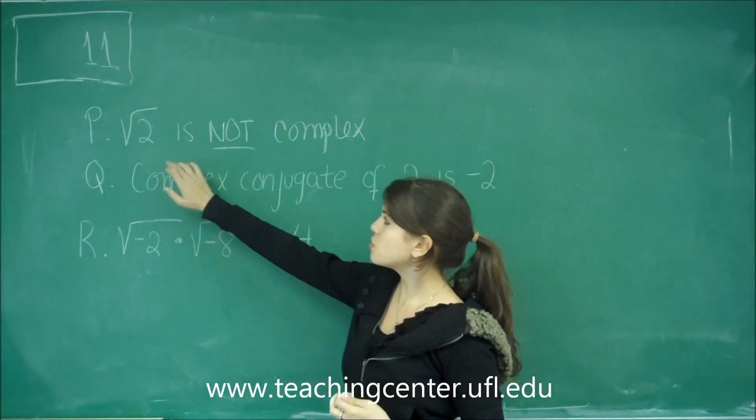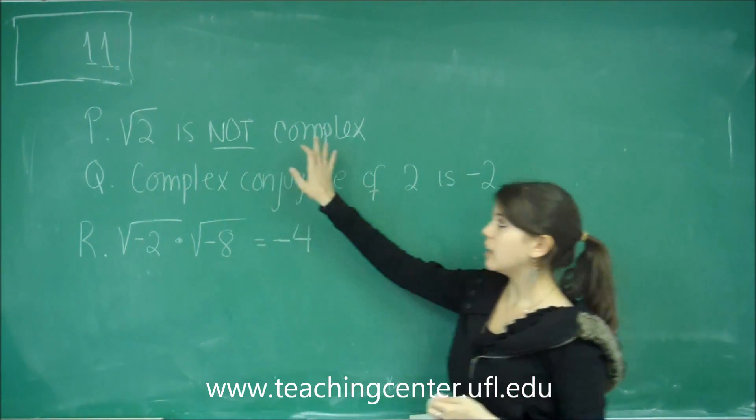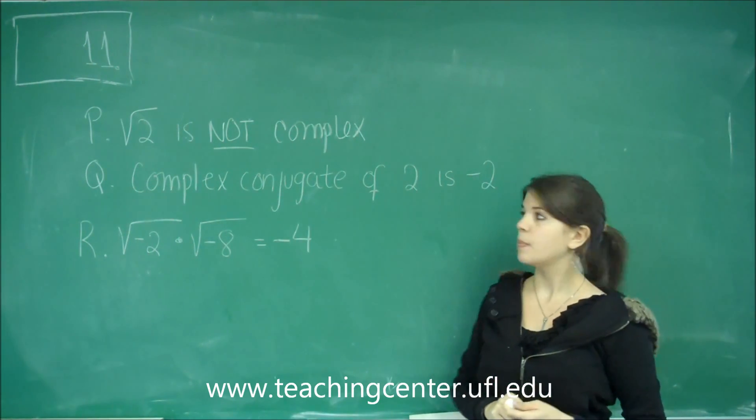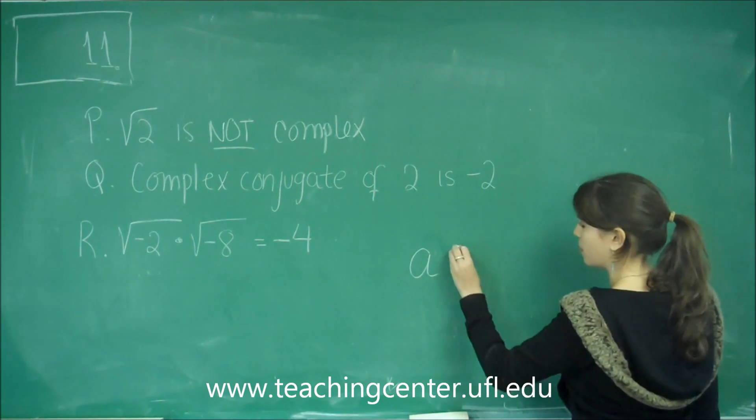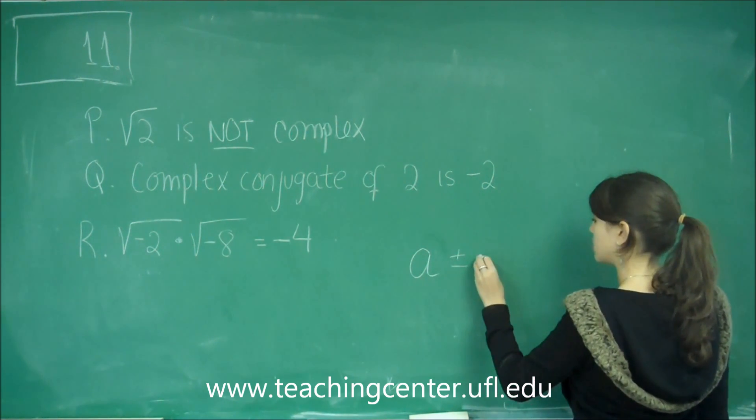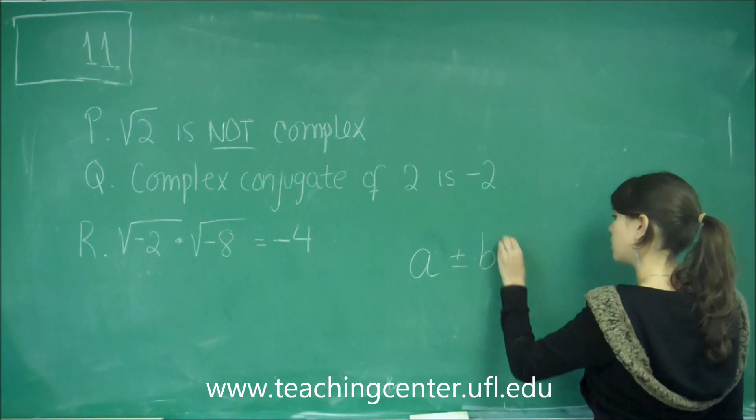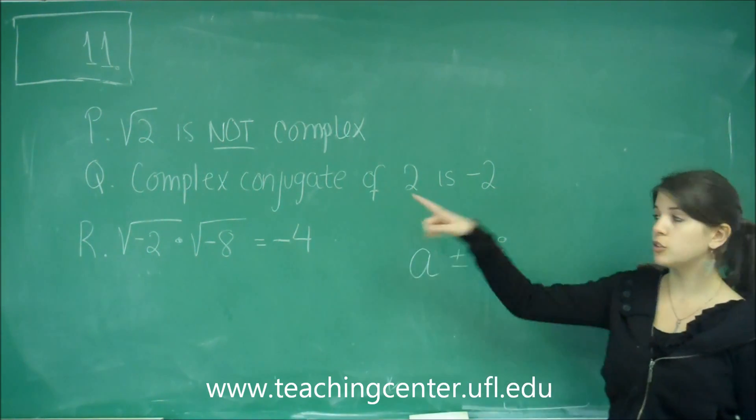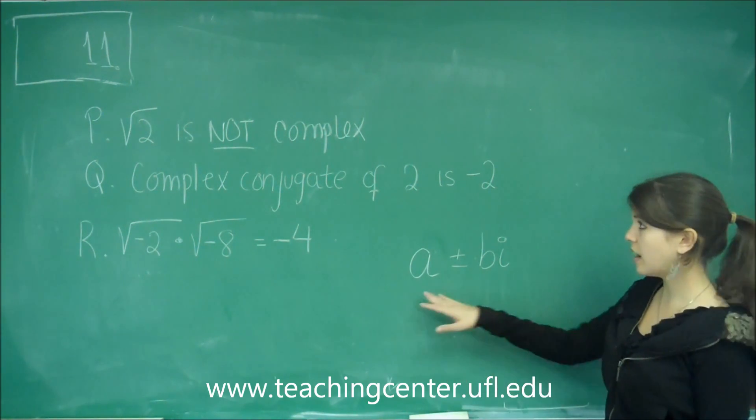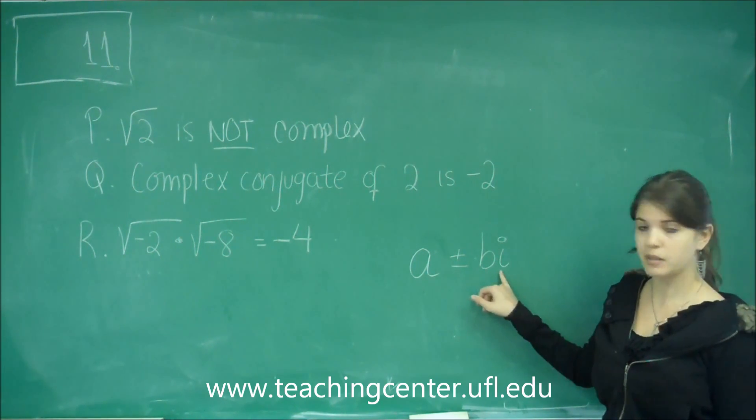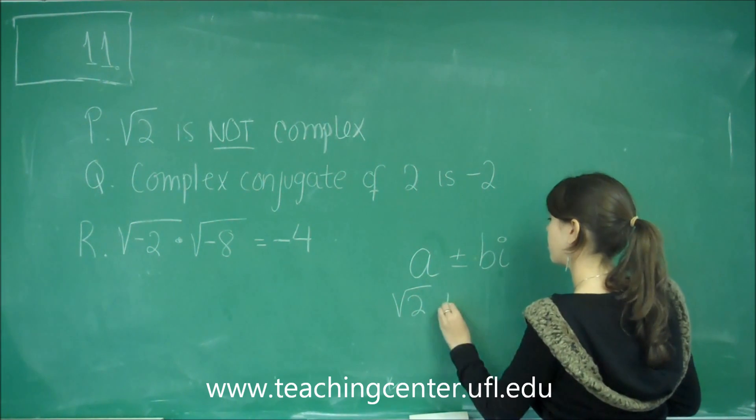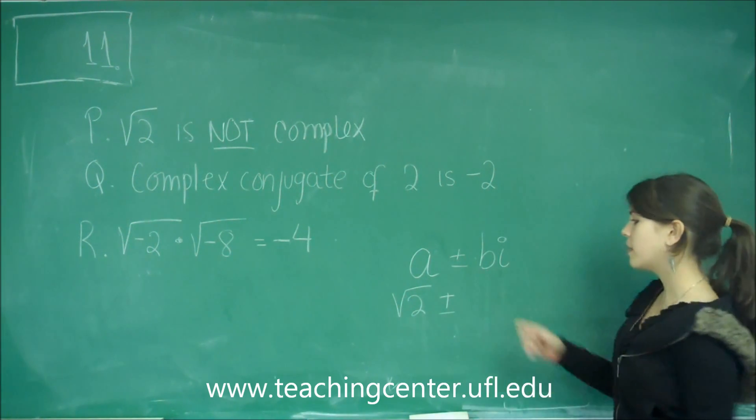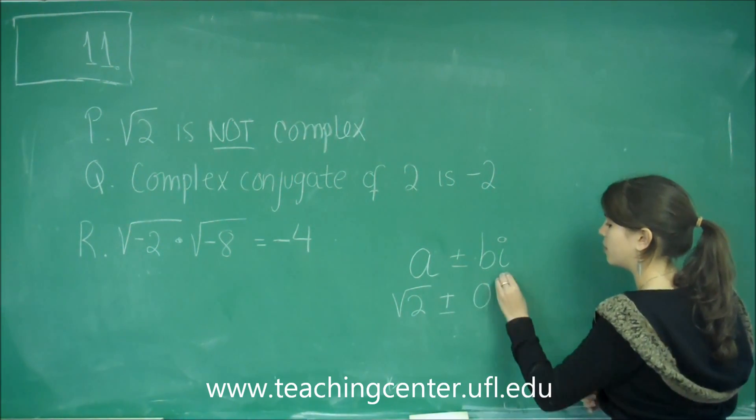P says square root of 2 is not a complex number. So, a complex number is anything that is written in the form A plus or minus B times I. Square root of 2 is a number, it does not have any I part to it, so that's the A. The B part would be 0, I.